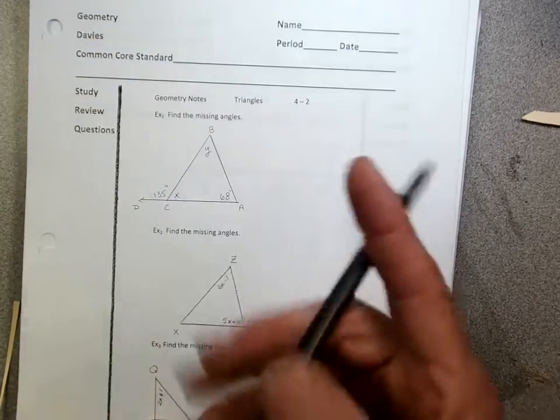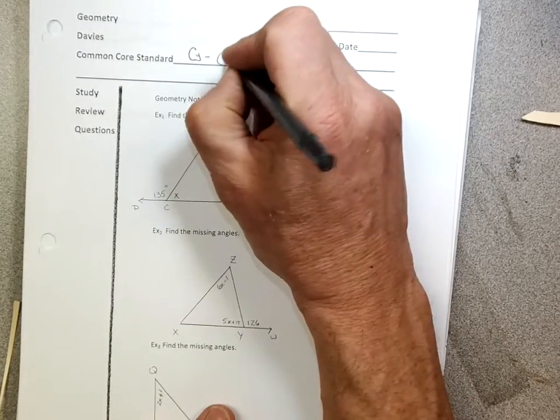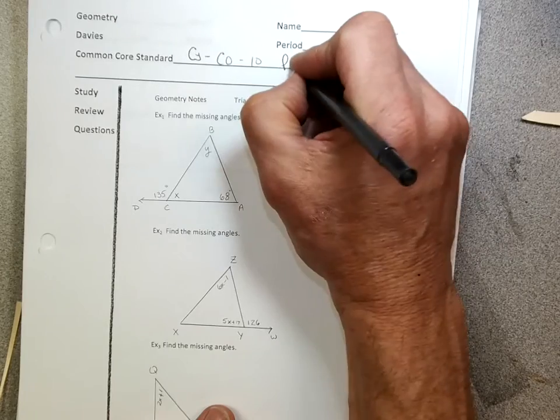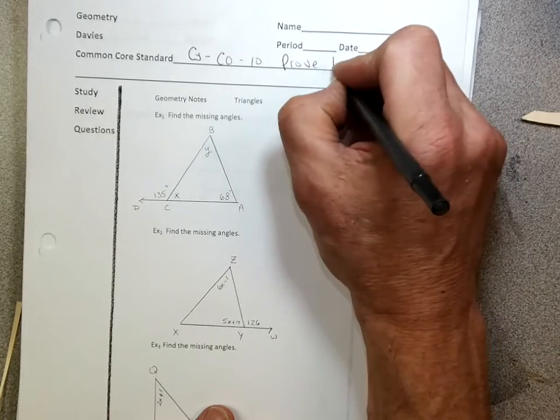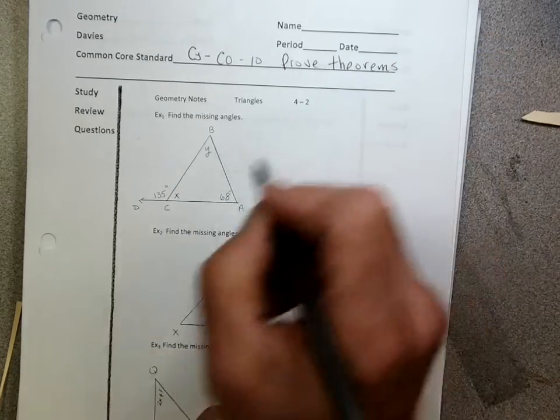So today, first of all, again, Common Core Standard is G for Geometry, CO for Congruence, and it's number 10 on the list, and it is Prove Theorems About Triangles.